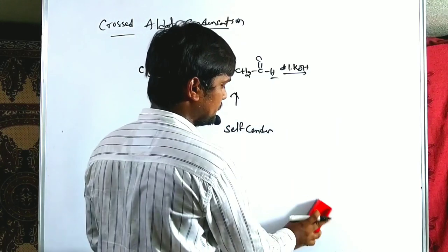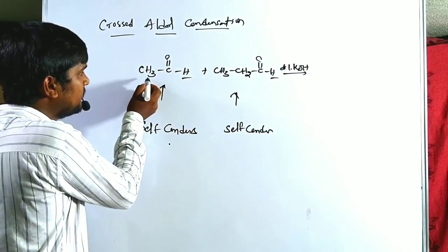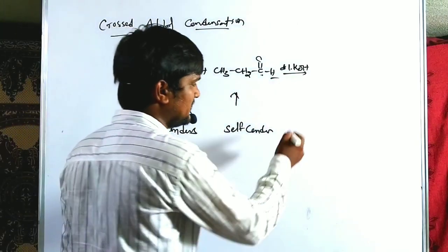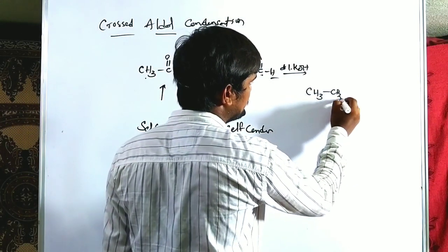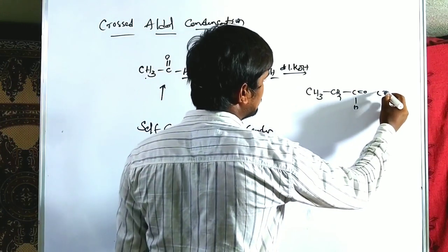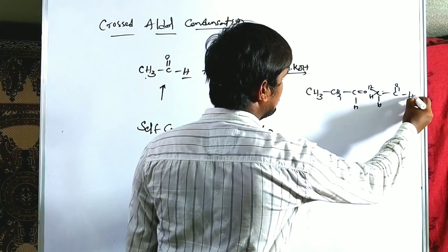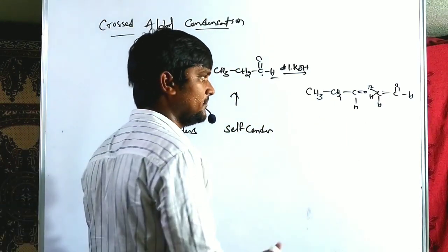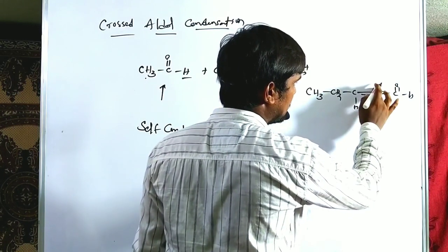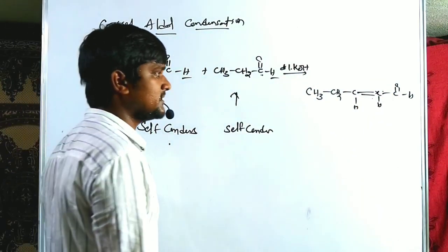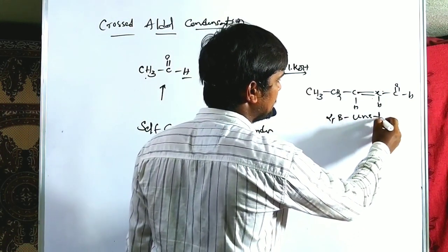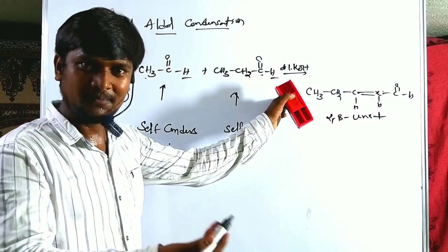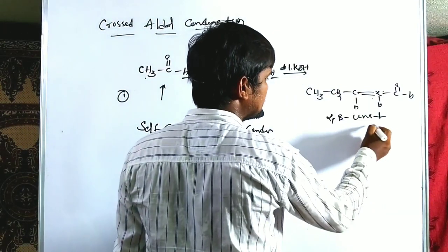So whenever the first aldehyde acts as a carbonion and the second aldehyde acts as a carbonion acceptor, that gives the first type of crossed product. In the reverse case, where the second forms the carbonion and the first is the carbonion acceptor, we get CH2 C=O here, CH3, with two hydrogens forming a carbon-carbon double bond — that is the second crossed product.